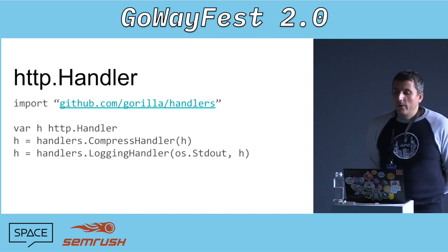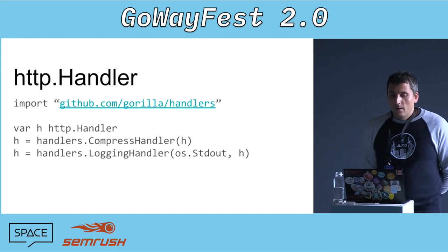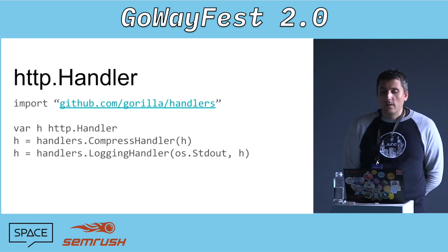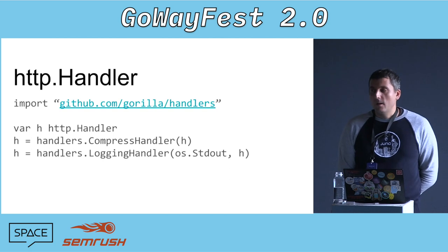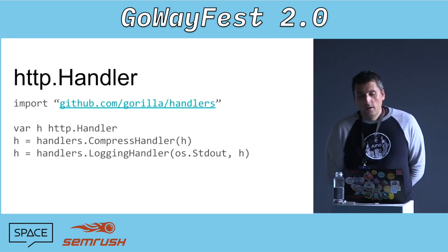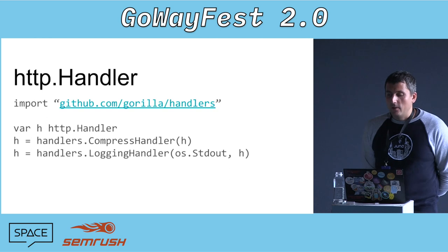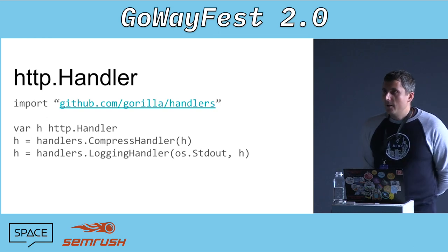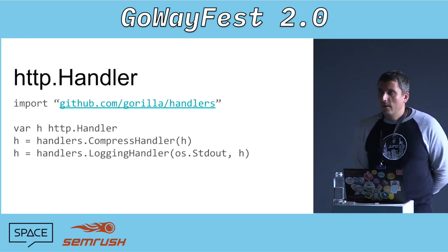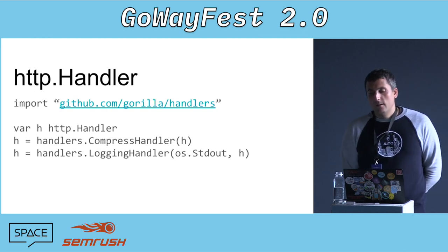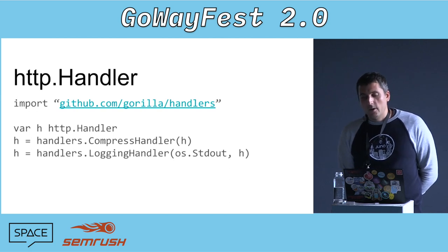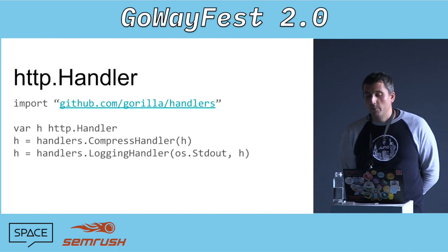We also have many decorators for HTTP handlers. For example, the Gorilla Handlers package offers some useful middleware, like a logging handler to log your requests in Apache common log format, or a compress handler that will compress the response to the client if the client sent a corresponding Accept-Encoding HTTP header. There are many other useful middleware in this package.